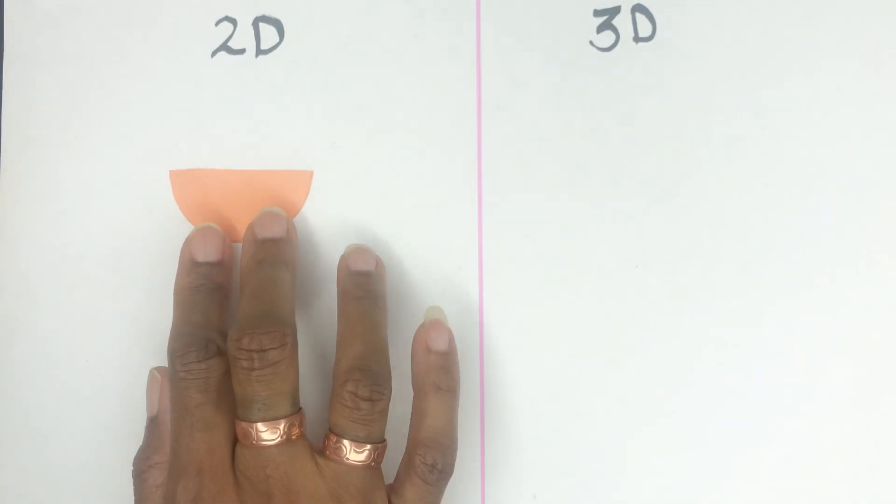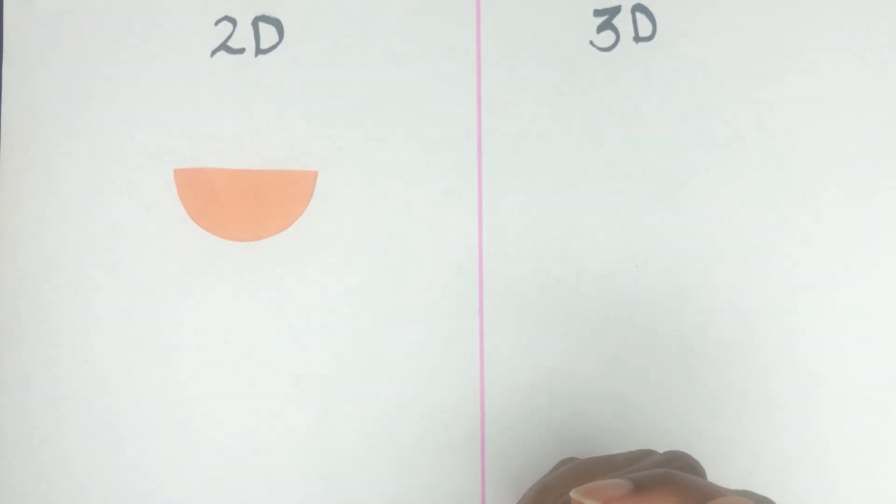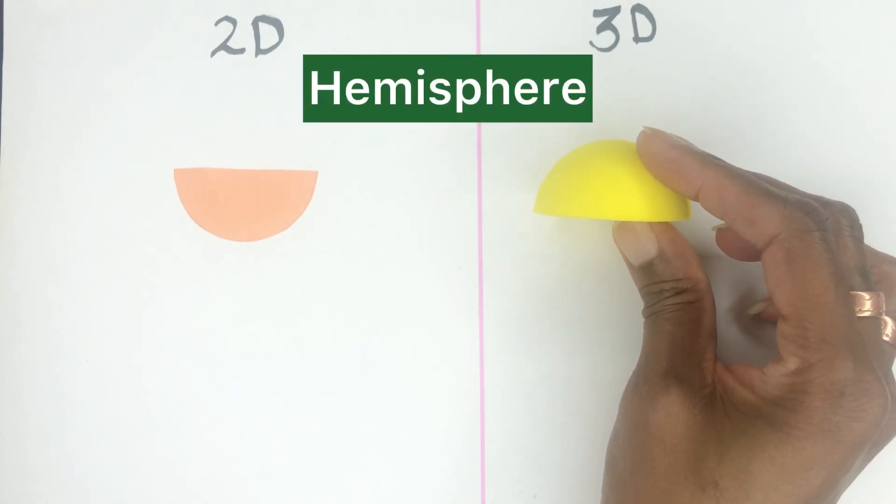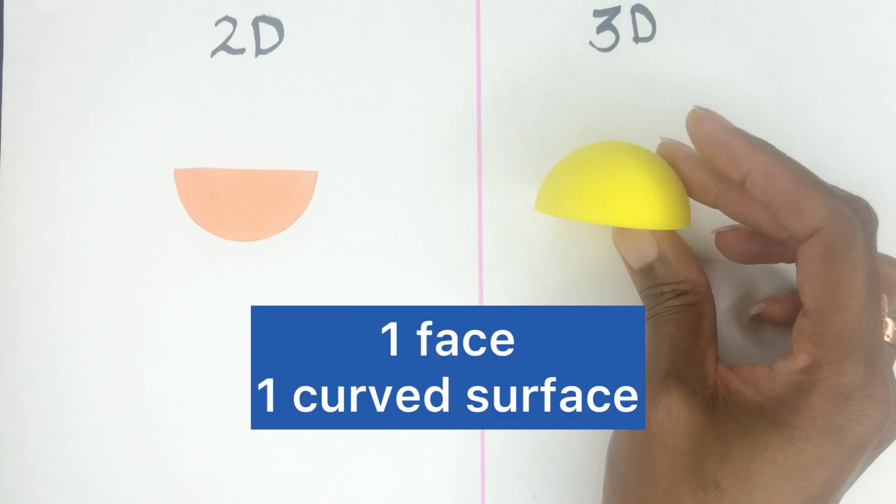A semicircle is two-dimensional, flat, with no thickness and no height. Three-dimensionally, as you can see here, once it's three-dimensional it's called a hemisphere. It has one face and one curved surface that you can see over the top here.